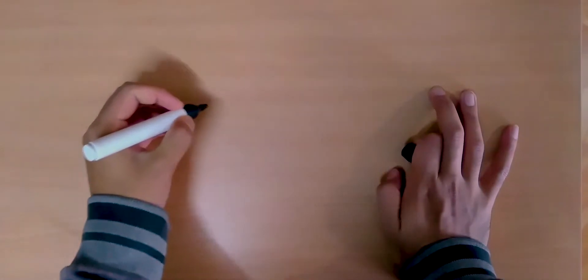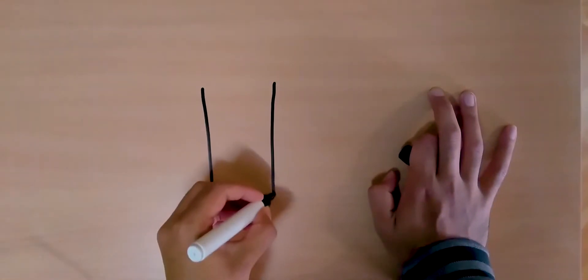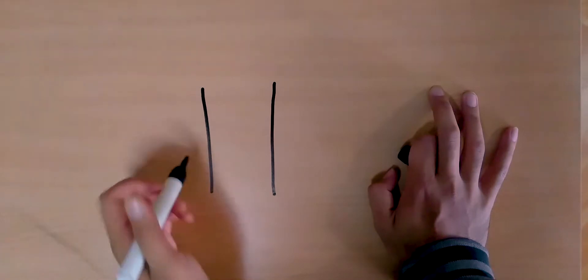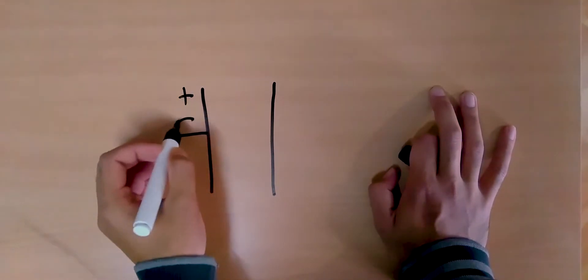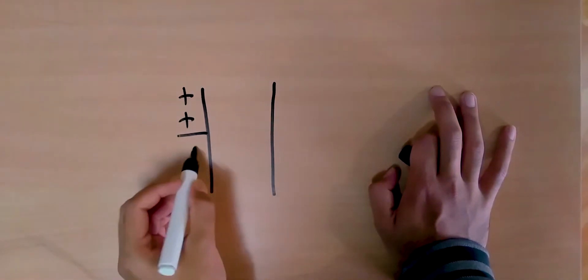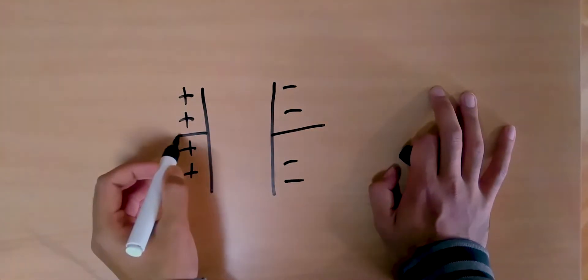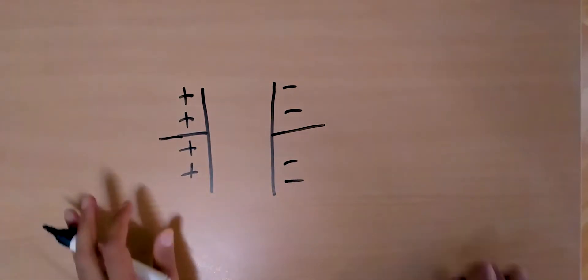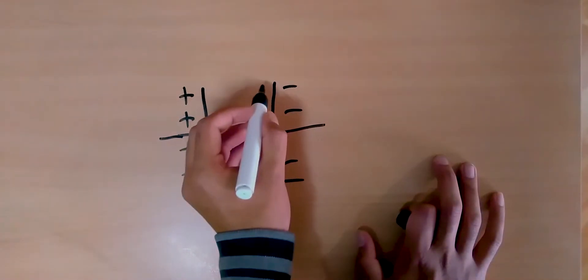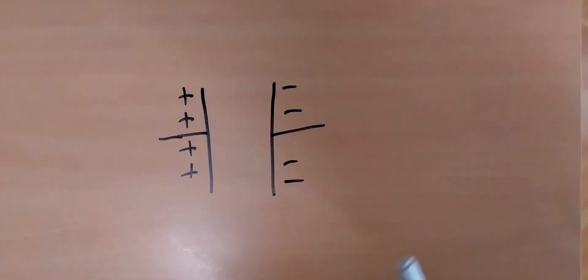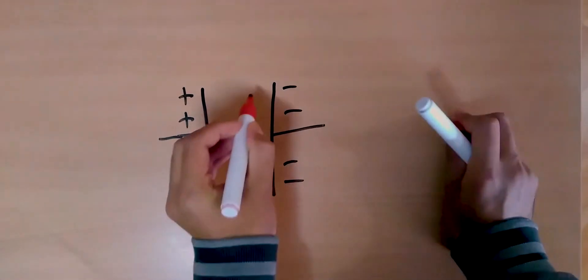A very small thing I forgot to tell you in the previous video was about dielectric strength. Let's quickly look at what that means. Consider a capacitor — the two plates of the capacitor are charged on both sides, and it's not connected to anything for now. There is some dielectric between the two plates, shown here in red.